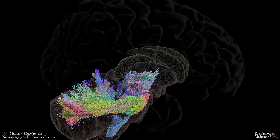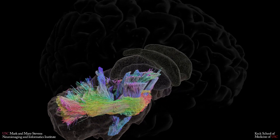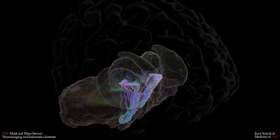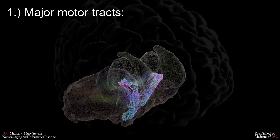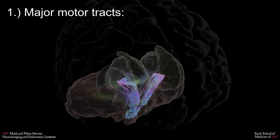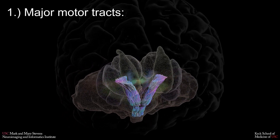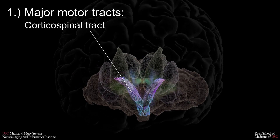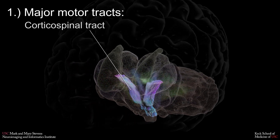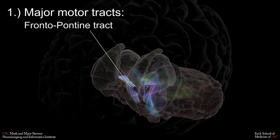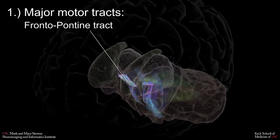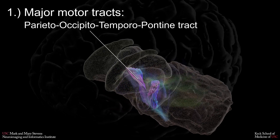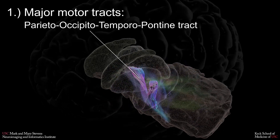These 23 brainstem fiber bundles can be divided into three groups. The first group consists of major motor tracts running principally on the ventral surface of the brainstem: the corticospinal tract, the frontopontine tract, and the parieto-occipitotemporopontine tract.